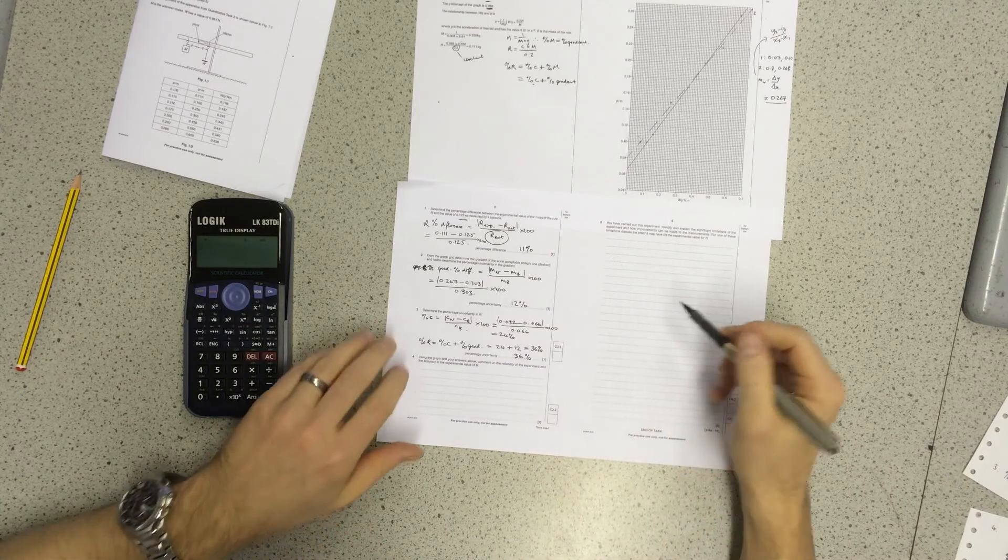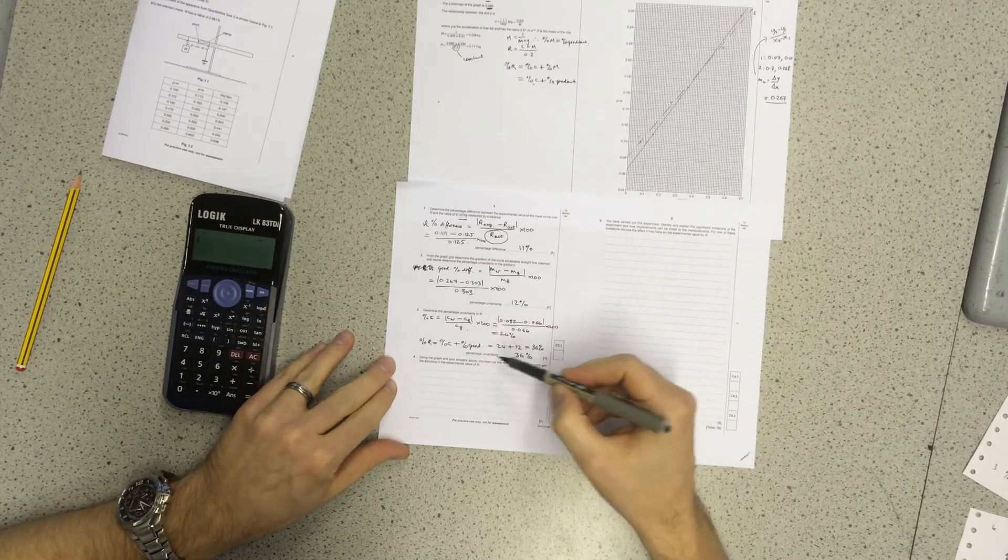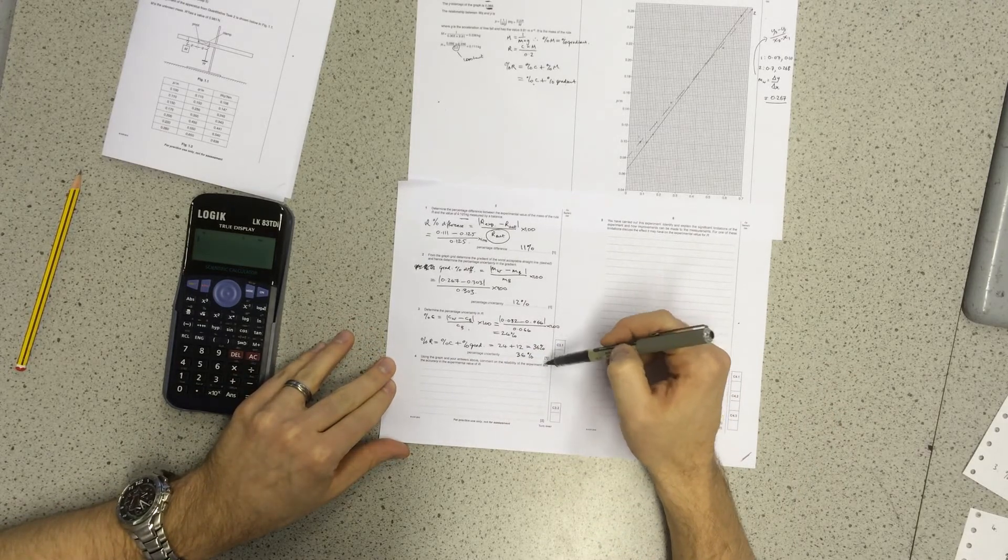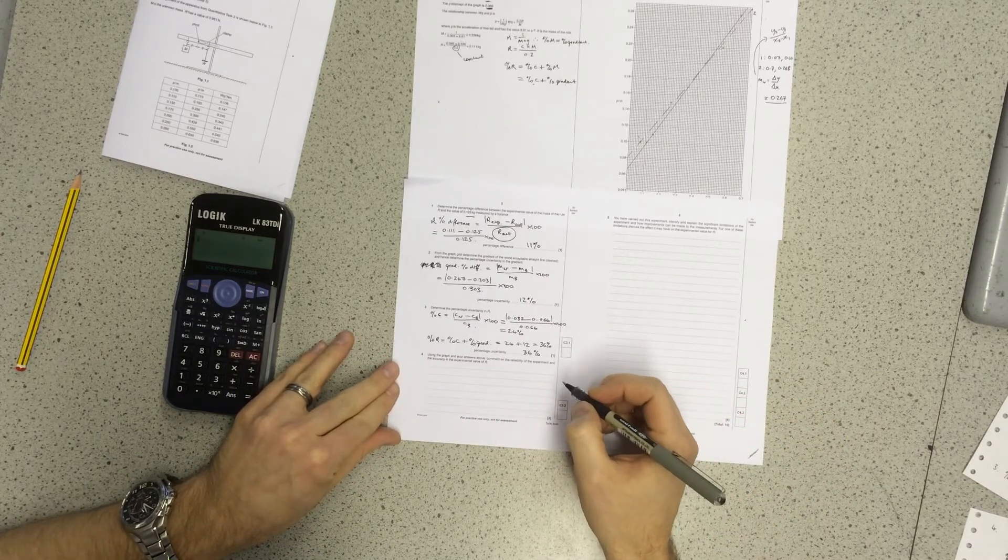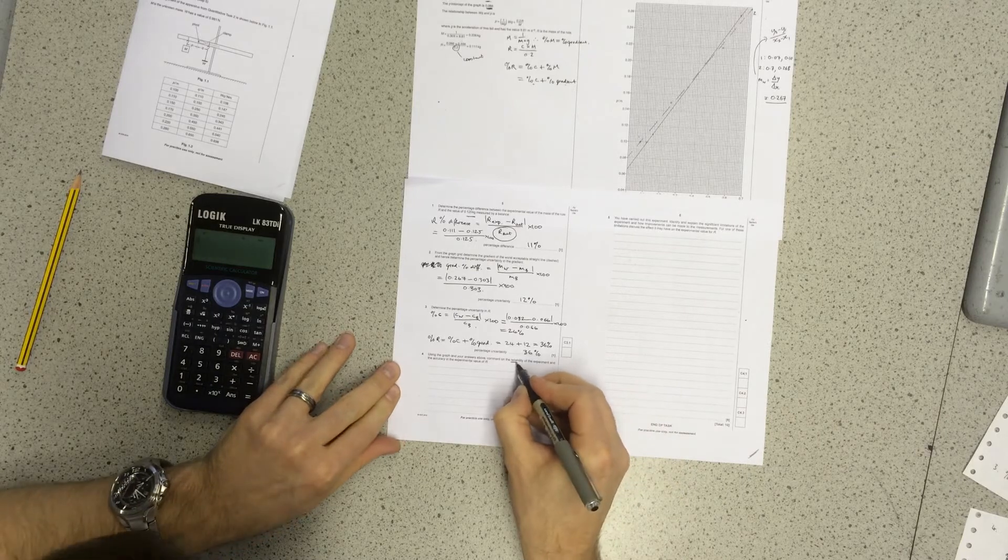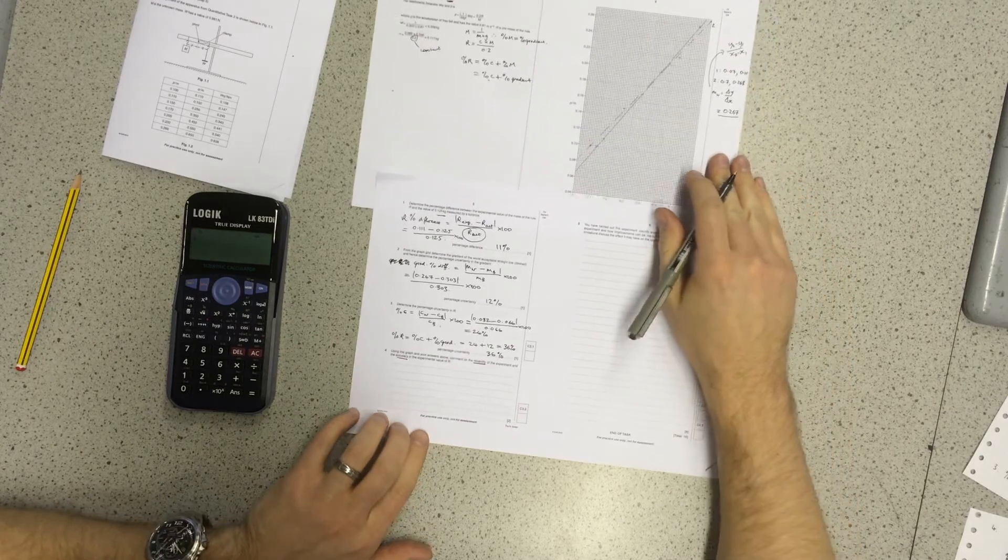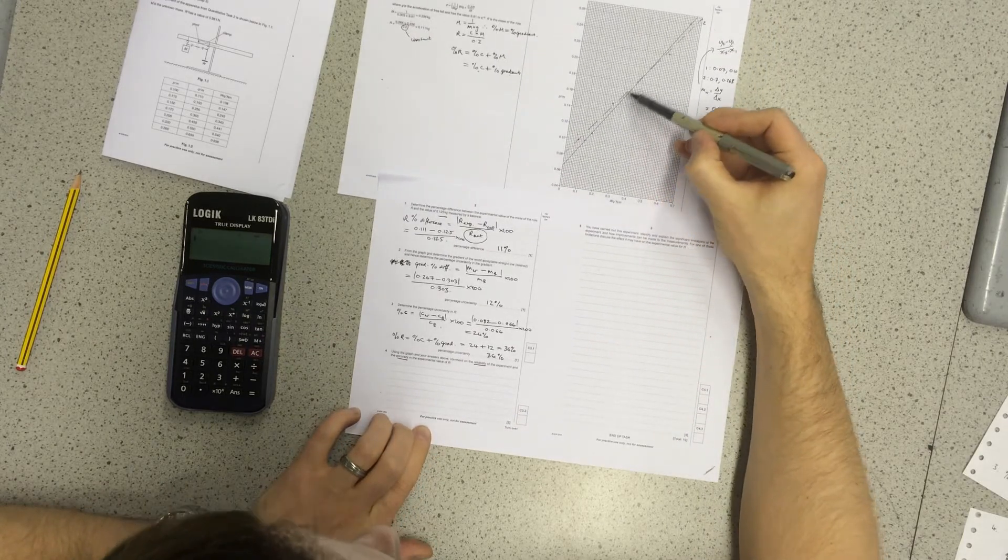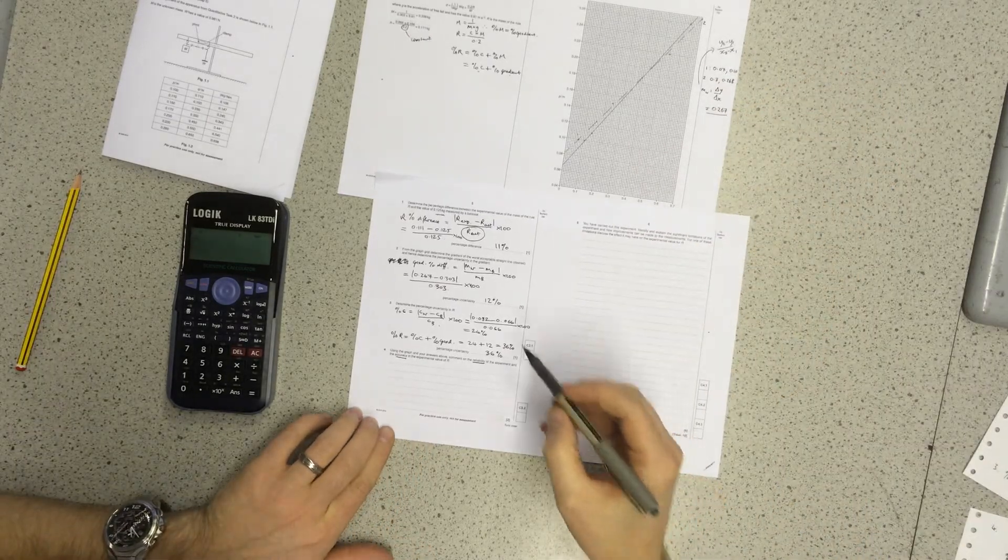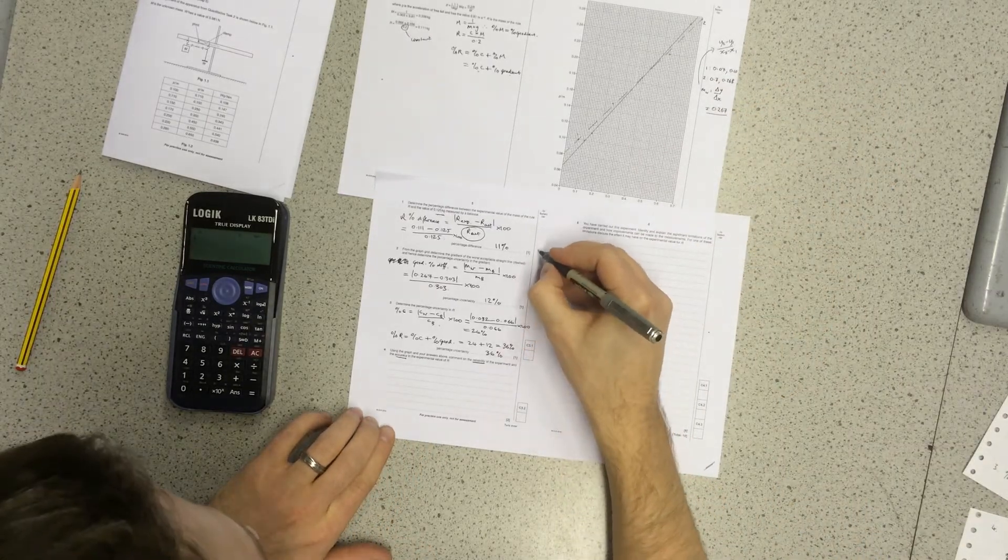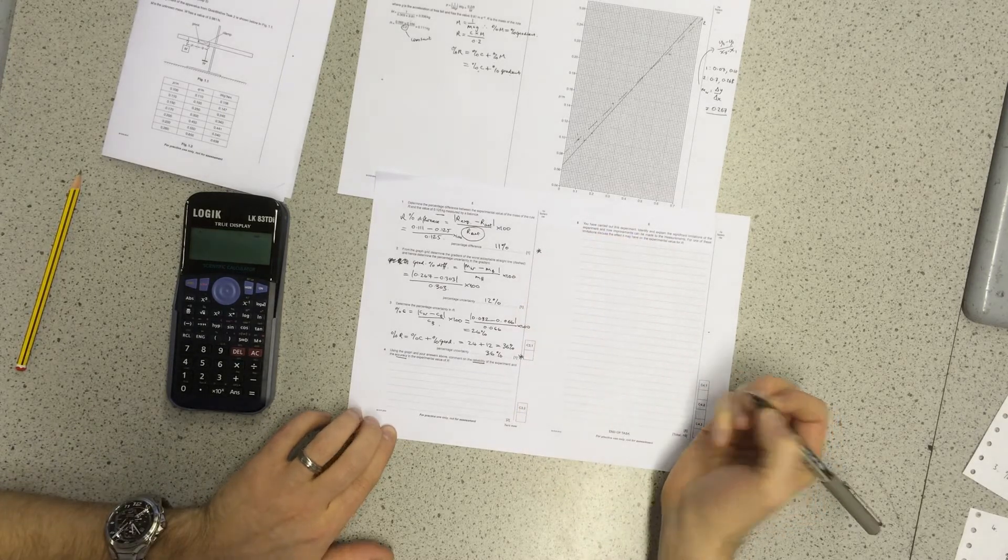Done our calculations. Question four. So that's worth three marks - one mark there, one mark there, one mark there. Question four, we need to comment on the accuracy and reliability. So we've got reliability and accuracy. The two aspects of this question are: first, look at the scatter of the points about the line of best fit. And two, we compare the percentage difference in r with the percentage uncertainty in r.